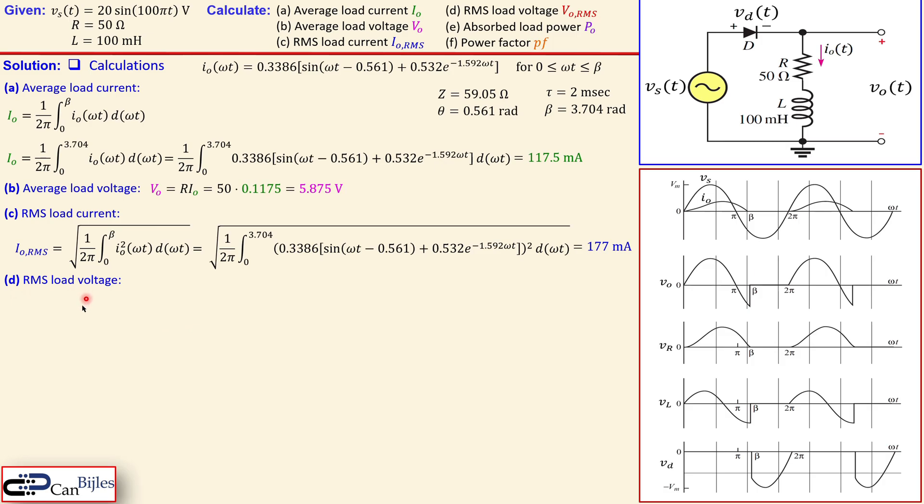The RMS load voltage. Now we need to be very careful. Because that is not really using Ohm's law. Because this voltage here will be across this output voltage for the time that this is valid. So that means from zero to beta. So we can say just integrate from zero to beta, this V_O squared. But it is also V_S squared. That same thing. And when you now substitute this 20 sin 100π t here, and then do the integration, again using the beta of 3.704, then you get here 10.18 volts.